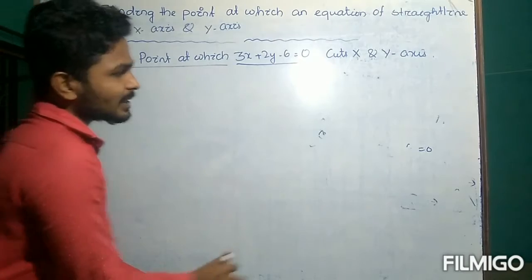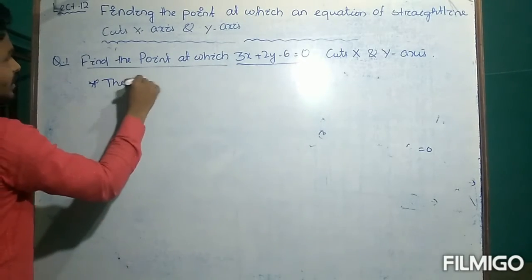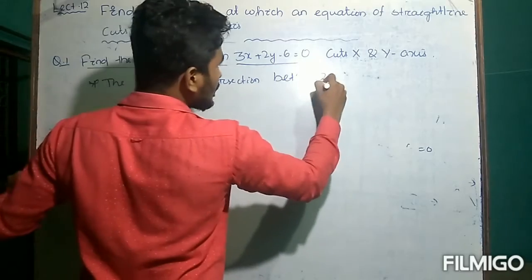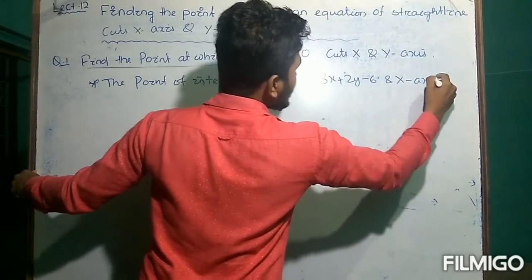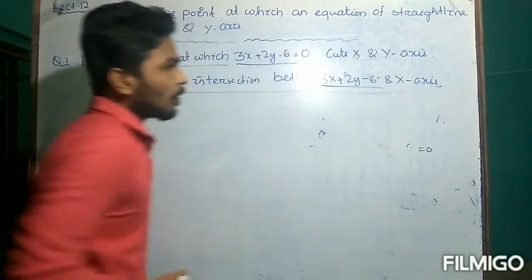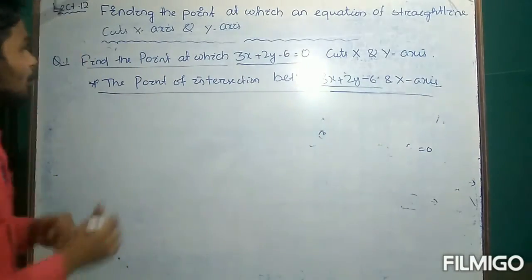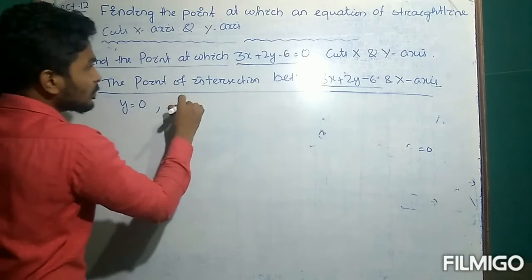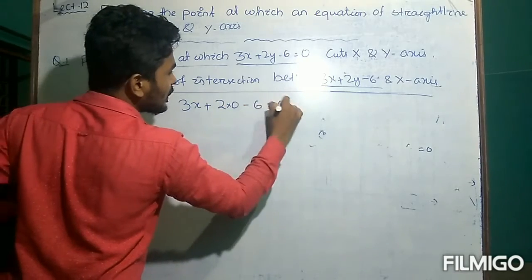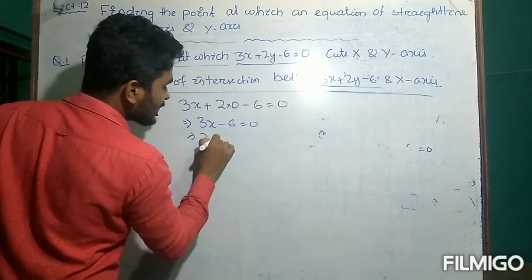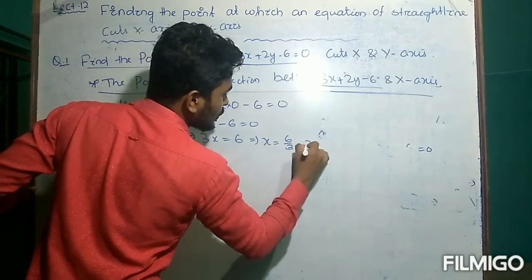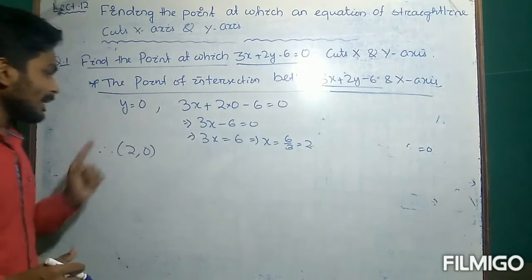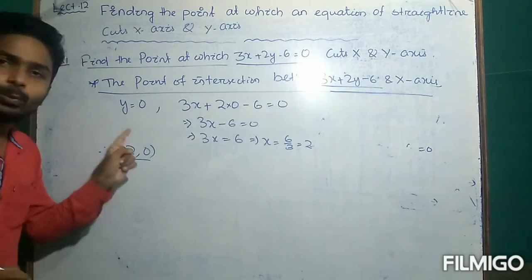First, we will find the point of intersection between the equation 3x plus 2y minus 6 equals 0 and the x-axis. For this, put y equal to 0 because on the x-axis the y-coordinate is 0. The equation becomes 3x plus 2 into 0 minus 6 equals 0, so 3x minus 6 equals 0, giving 3x equals 6 and x equals 2. Hence the solution is (2, 0), meaning this linear equation meets the x-axis at the point (2, 0).